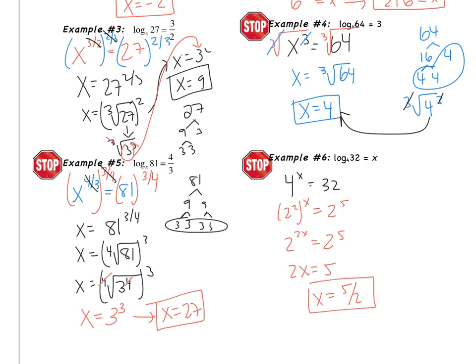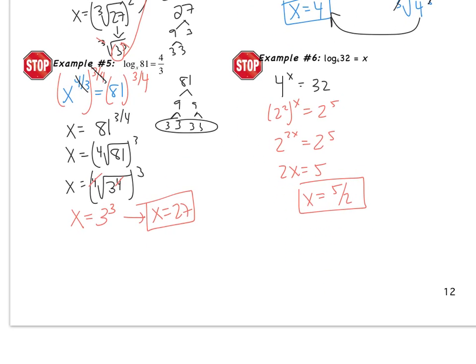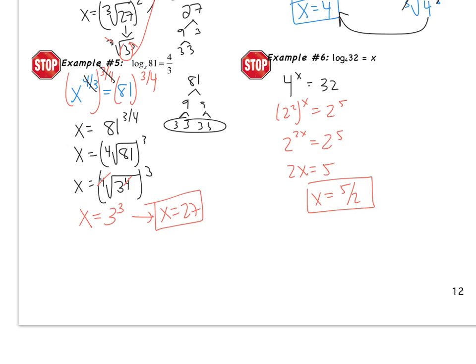That was solving logarithmic equations. This is really nothing new — you just take your equation, write it in exponential form, and then solve. All of these techniques you've seen before; the only part that's new is switching from the log to the exponential form. Before we leave, write down one last example to complete for class tomorrow: log base 9 of 1 over 27 equals x. Your teacher will be checking that you have this problem completed, in addition to the previous six problems. Good luck!